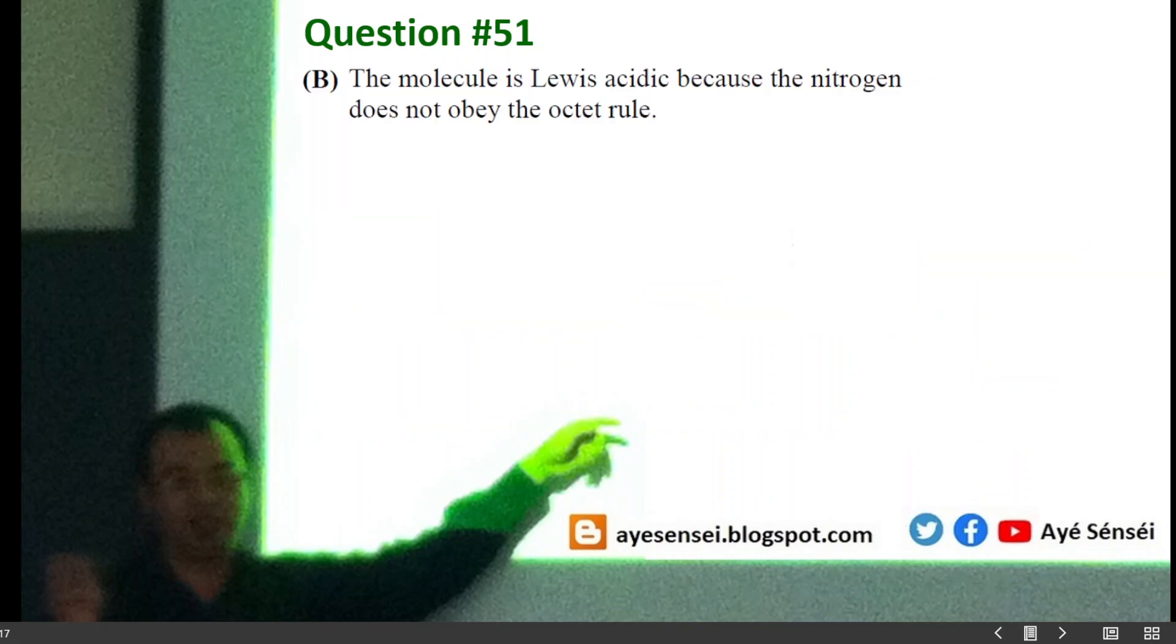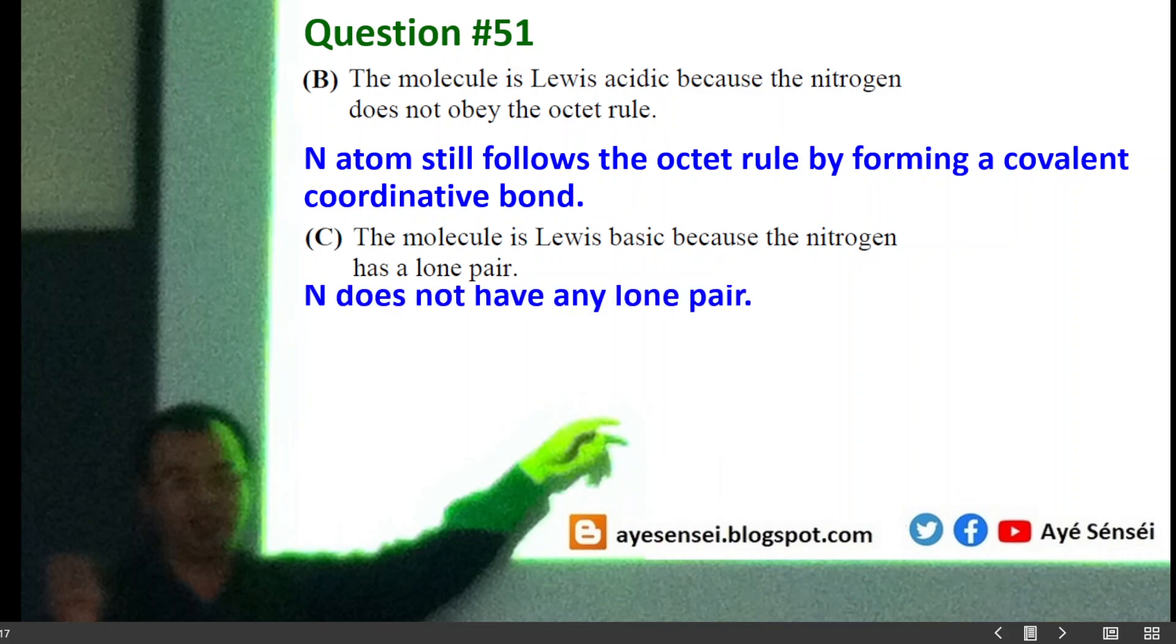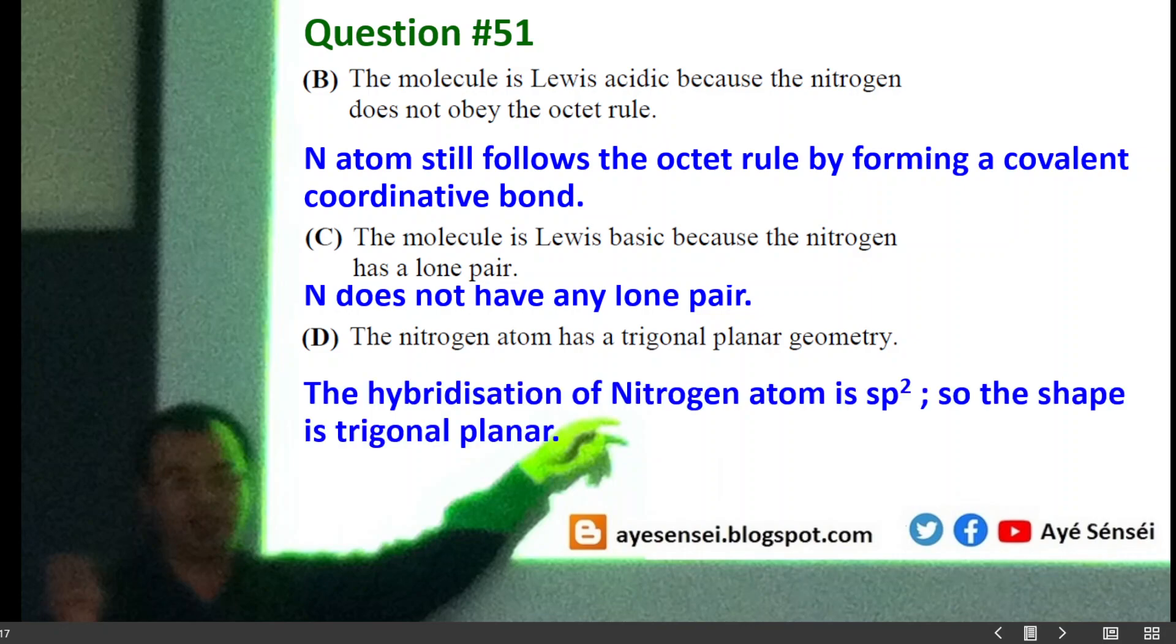And then let's see option B: the molecule is Lewis acidic because the nitrogen does not obey the octet rule. So actually nitrogen atom still follows the octet rule by forming coordinative covalent bond. So statement B is wrong. And then C: the molecule is Lewis basic because nitrogen has lone pair. So this is also wrong. And then option D: the nitrogen atom has trigonal planar geometry. If you still remember the drawing, so the hybridization of nitrogen atom is sp2, which means that the shape is trigonal planar. So the correct answer is D.